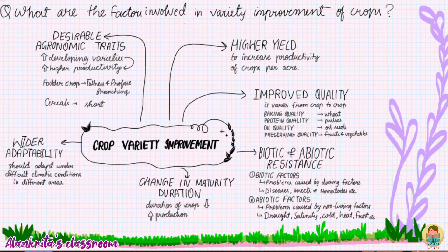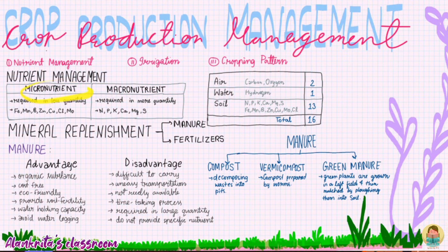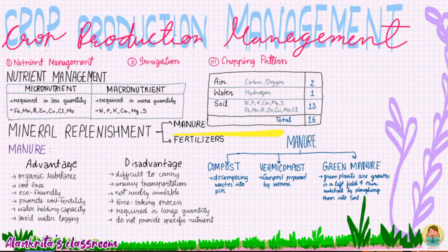The second method is crop production management. There are various steps like nutrient management, irrigation, and cropping pattern. In nutrient management, there are basically 16 nutrients that need to be provided and those are divided into micro and macronutrients. Micronutrients are needed in less quantity and macronutrients in more quantity. For replenishment of minerals, we need manures and fertilizers.